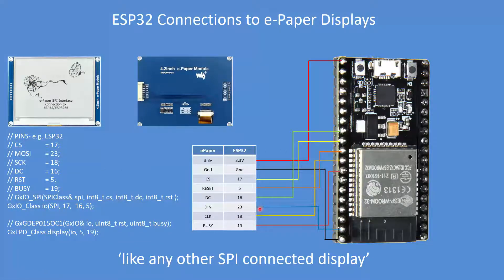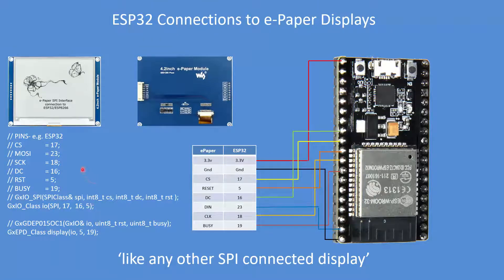In terms of the master-out slave-in, those are fixed entities, and the system clock on pin 18 is also a fixed entity. In terms of the second element of the class, the reset is repeated: pin 5 is a repeat of this class object — pin 5 reset. Pin 19 is the busy signal, and similarly busy is defined there.